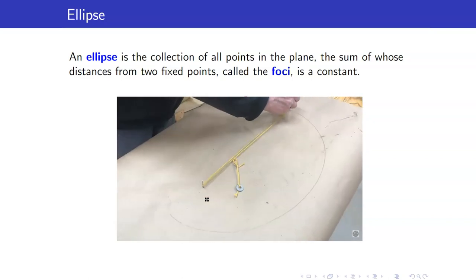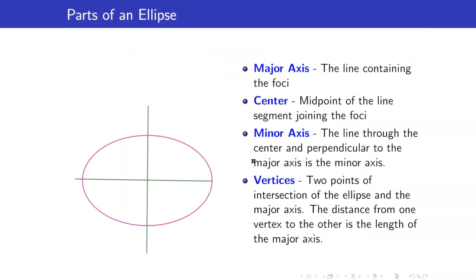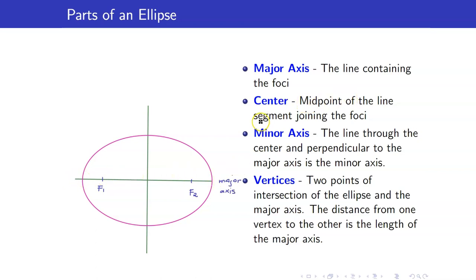You can generate your own ellipse by using two pins, a pencil, and a string. Let us look at the parts of our ellipse. The first and second foci are given. The major axis is the line containing the foci. The center is the midpoint of the line segment joining the foci. The minor axis is the line through the center perpendicular to the major axis. The vertices are the points of intersection of your ellipse and the major axis.